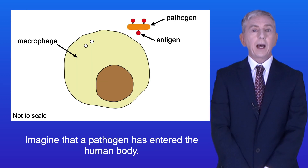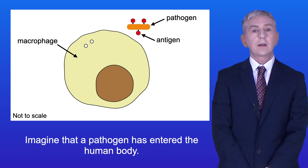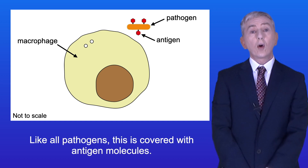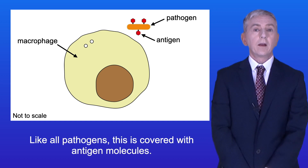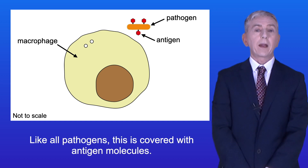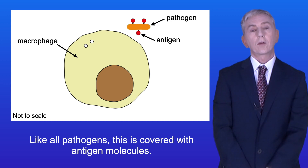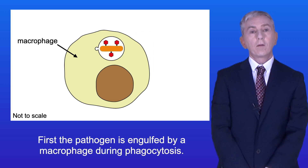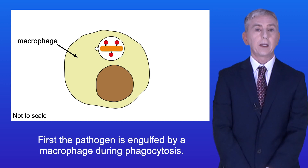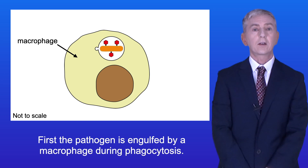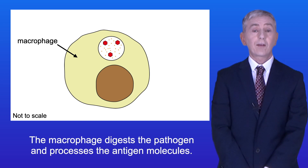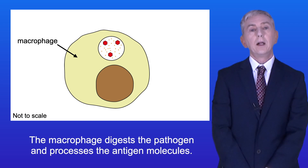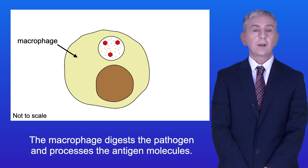Imagine that a pathogen has entered the human body. Like all pathogens, this is covered with antigen molecules. First, the pathogen is engulfed by a macrophage during phagocytosis. The macrophage digests the pathogen and processes the antigen molecules.